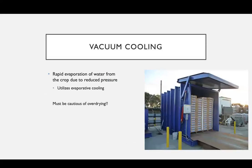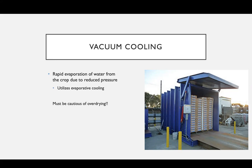Vacuum cooling is the rapid evaporation of water from the crop due to reduced pressure. They'll load in the crop, the door will shut and create a vacuum within it, using evaporative cooling. We're using that vapor pressure deficit to increase transpiration, which cools the plant — using the latent cooling of evaporation.